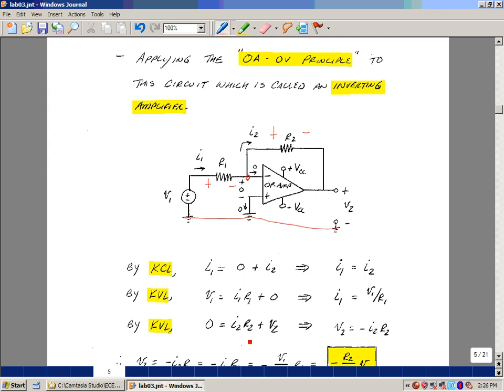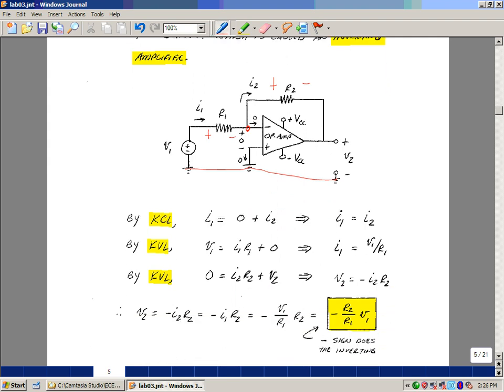So I could solve for this equation, V2, and that would be the negative I2 R2. Okay, so I've got V2 in terms of I2, but I2 is the same as I1, and I1 is V1 over R1. So if you divide through by V1, you have a gain of minus R2 over R1.